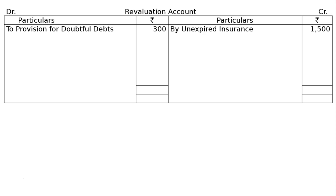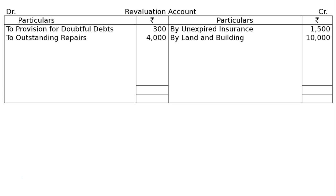Part C: land and building be appreciated by 20%. Land and building is 50,000, so 20% = 10,000 increase in asset — goes to credit side of revaluation as land and building 10,000. Part D: a provision of 4,000 be made for outstanding repairs — increase in liability, goes to debit side of revaluation.